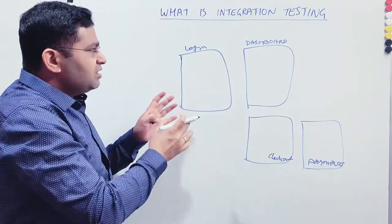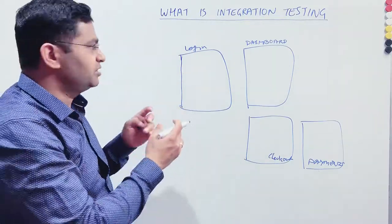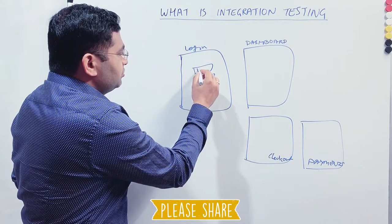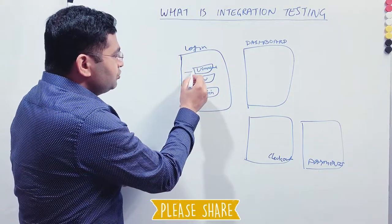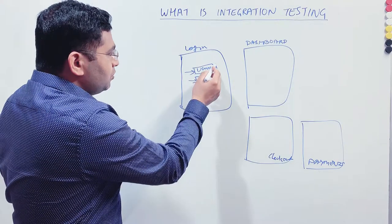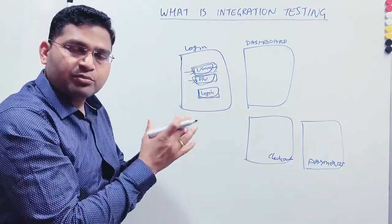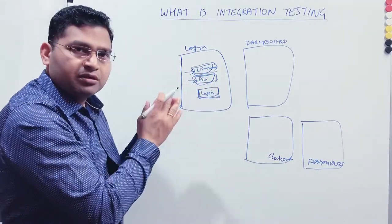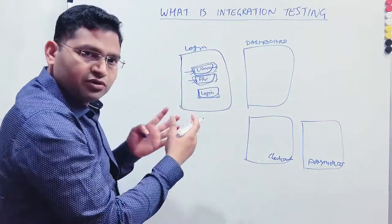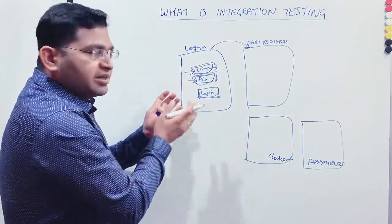These different modules are integrations of smaller units. For example, the login page has a username field, a password field, and a login button. Each of these can be a unit tested independently. Business logic is also integrated — when the user enters username and password and clicks the login button, after a successful login the user is redirected to the dashboard.